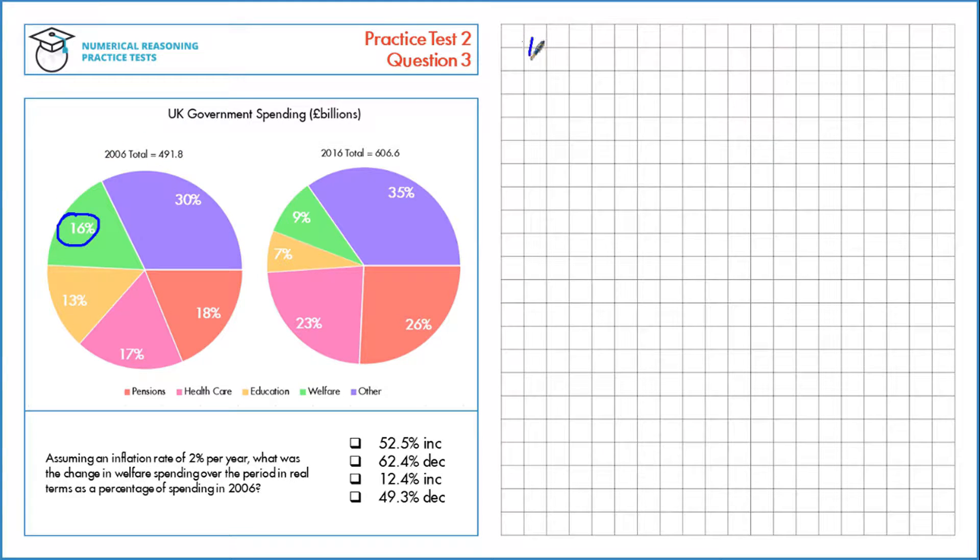If we take this 491.8 billion, that's our starting point, and we need to increase by 2% per year. That's a multiplier of 1.02. If we're doing this for 10 years from 2006 to 2016, we raise that multiplier to the power of 10. That gives us an adjusted value of 599.5 billion, so that's our 2006 adjusted total. Essentially, what that money is worth now in 2016 due to inflation.